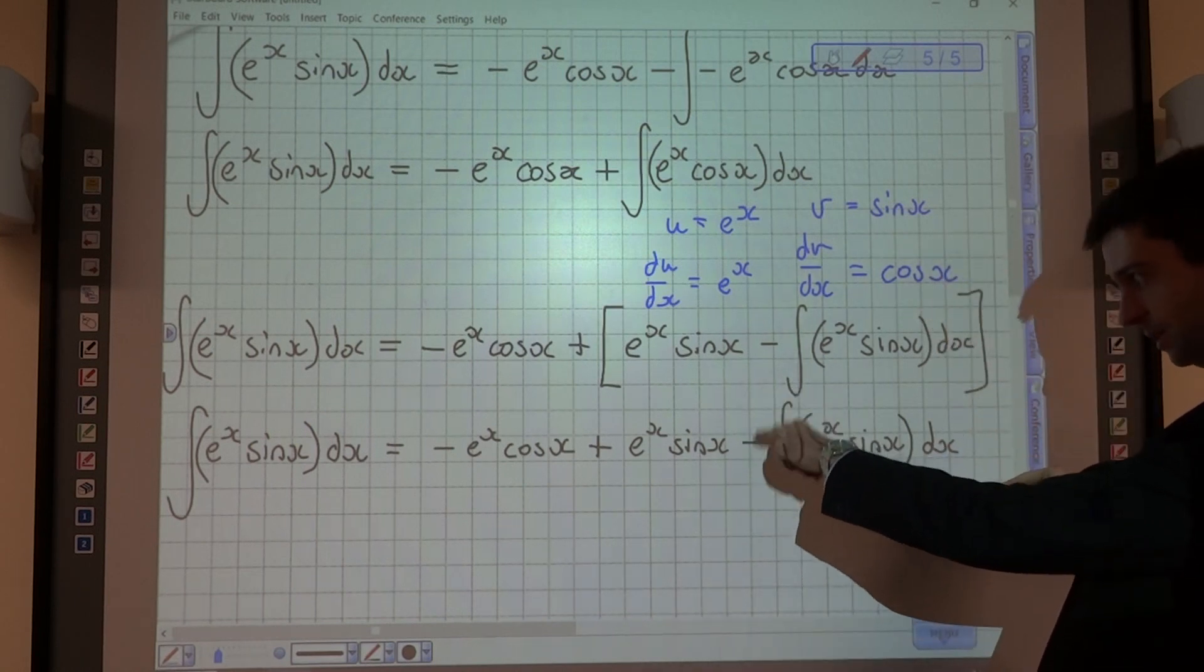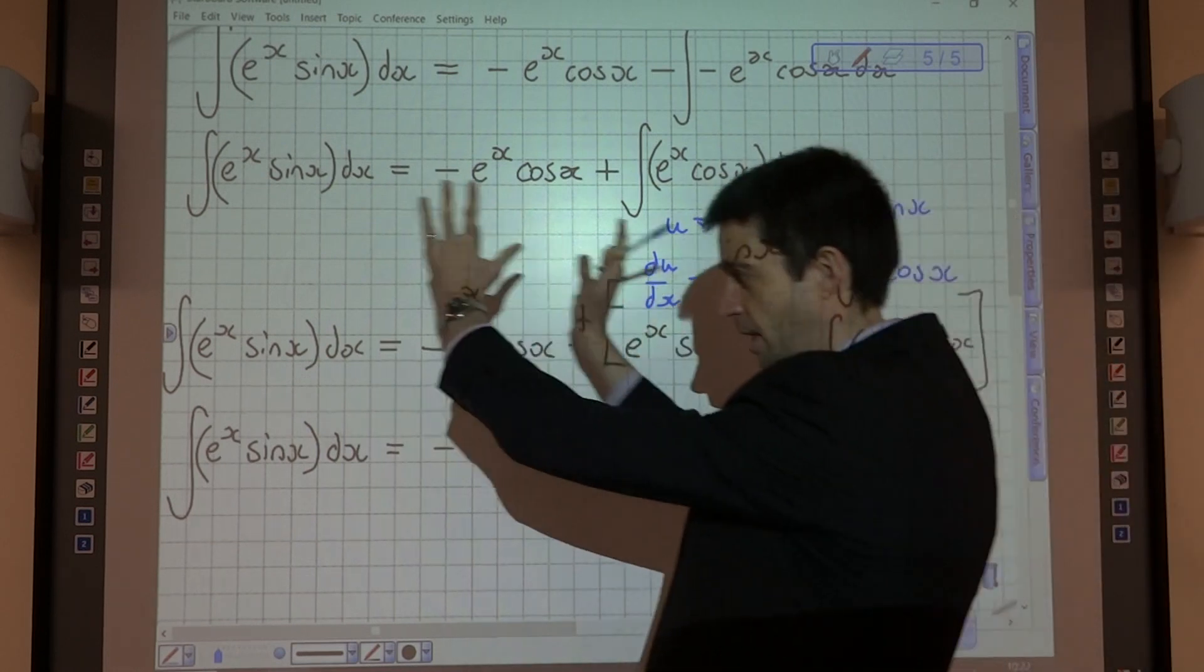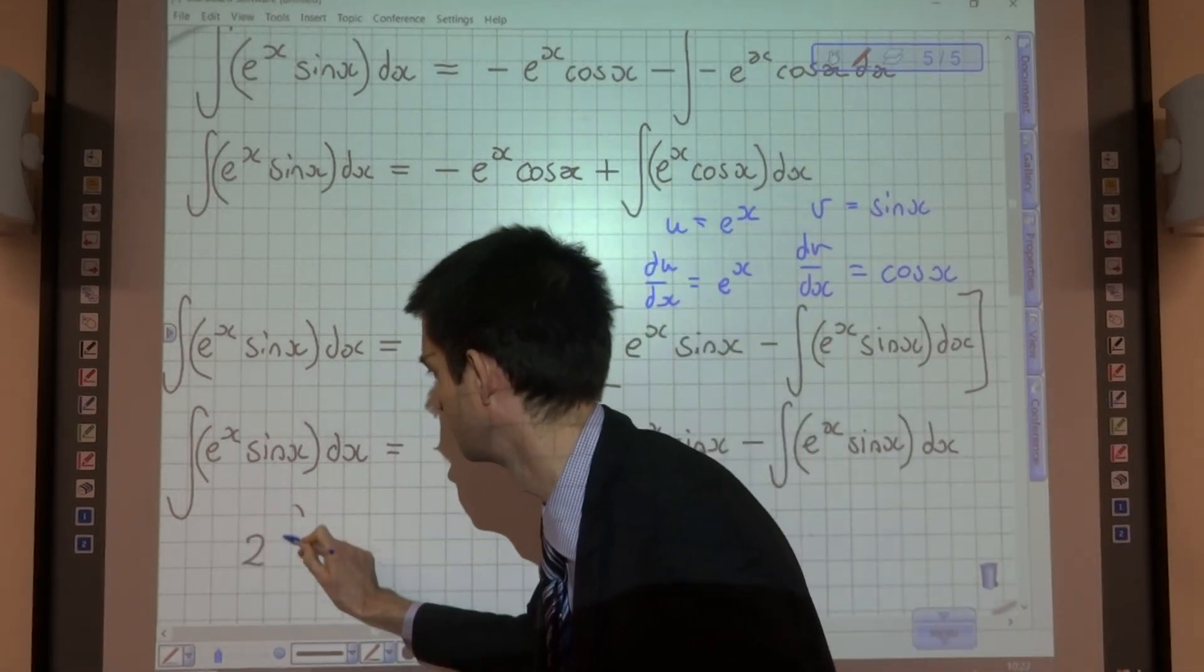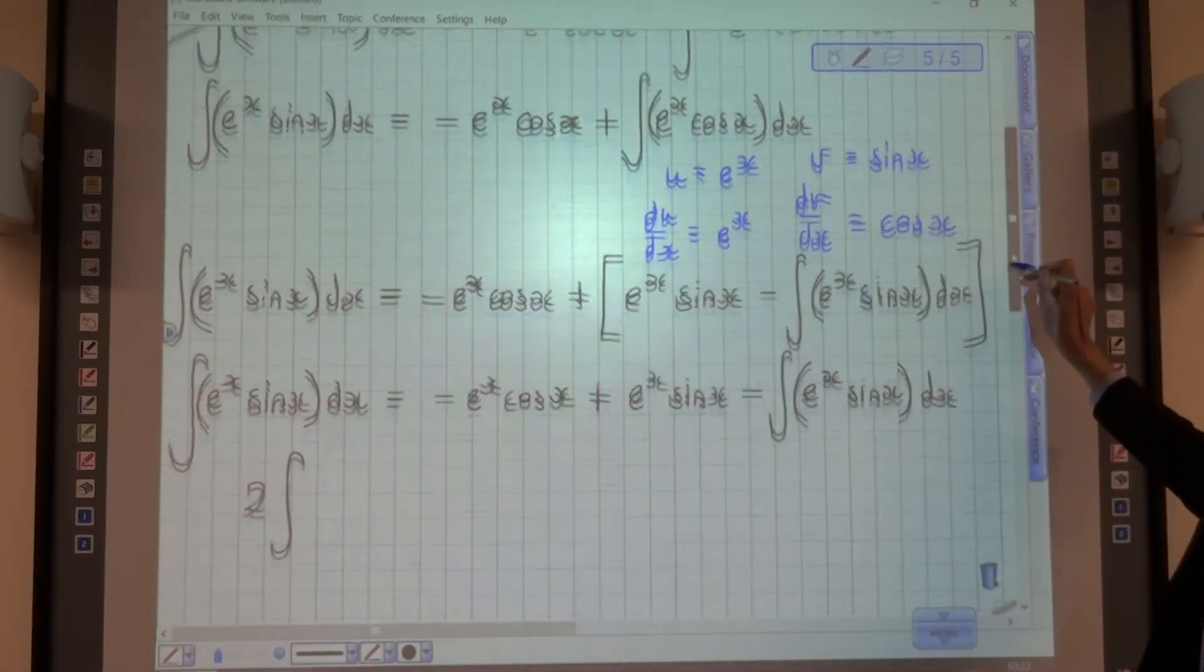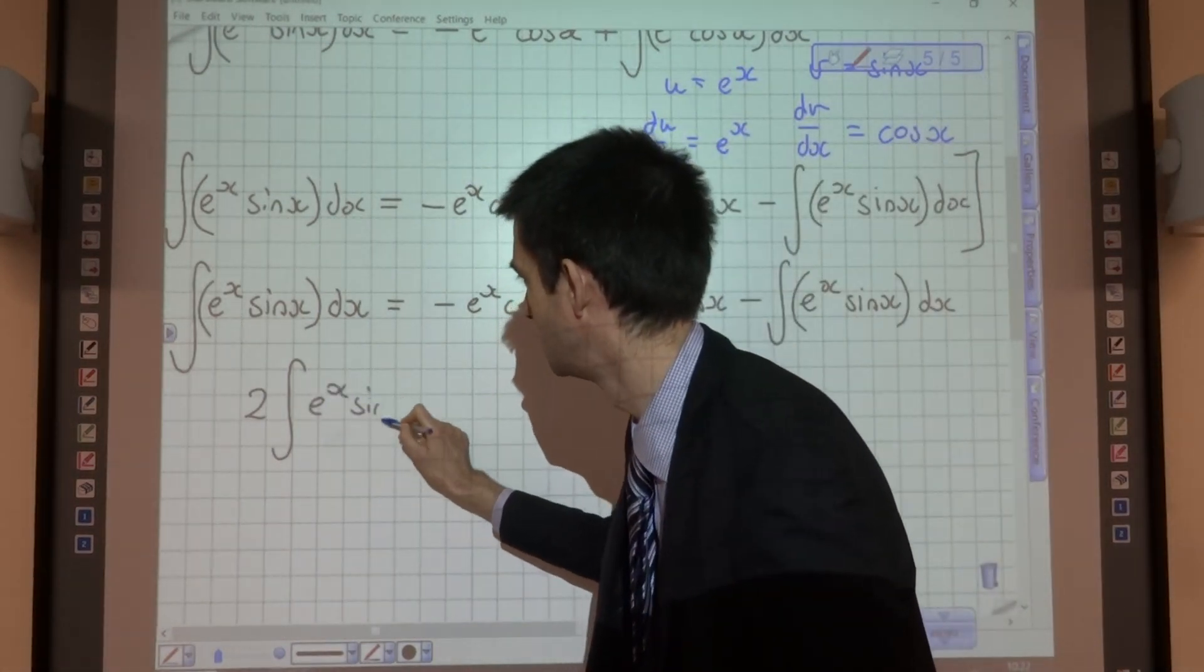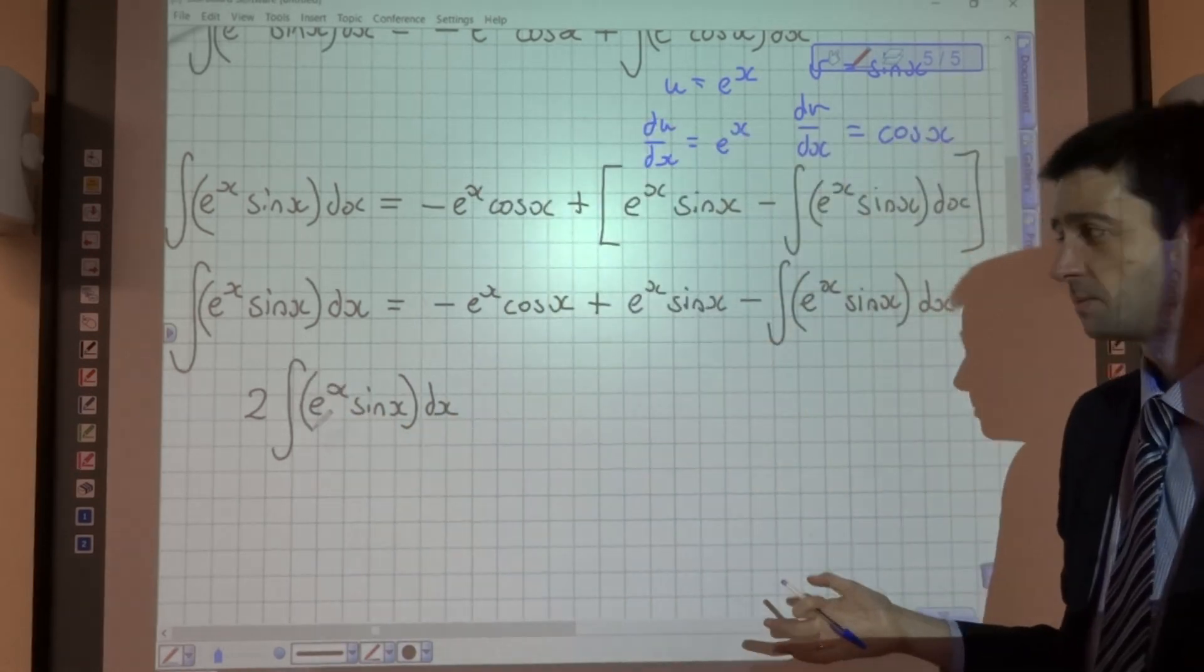Here we've got negative the integral of e to the x sin x. We can add all that over onto the other side and that will actually give us two lots of the same integral because we can collect those integrals just like we would normally collect like terms.